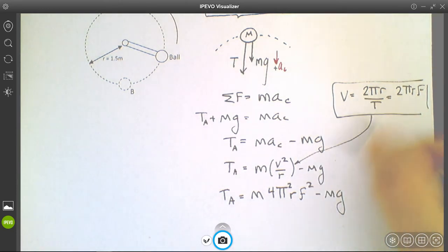If we square the 2, it's 4. If we square the π, it's π². And then r² divided by r leaves you with one r, and then the f² is there. So that is the tension at the top. I'm going to let you put in the numbers for that to figure out what the value is.